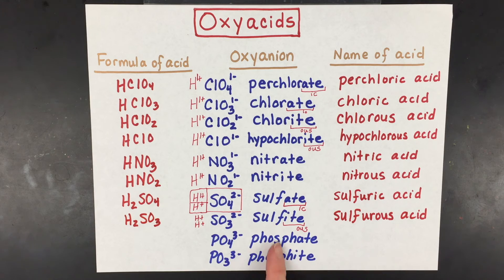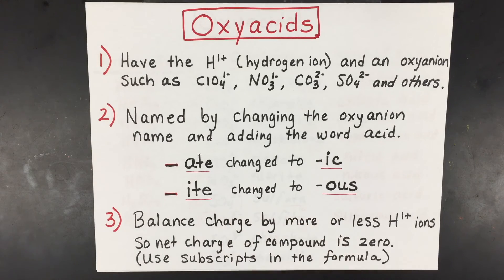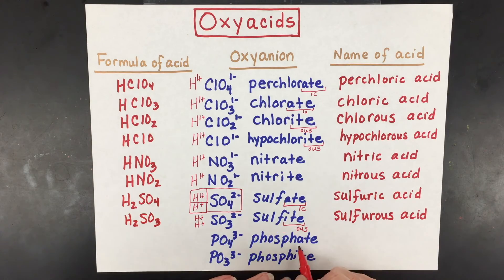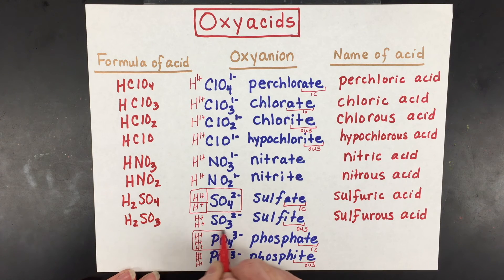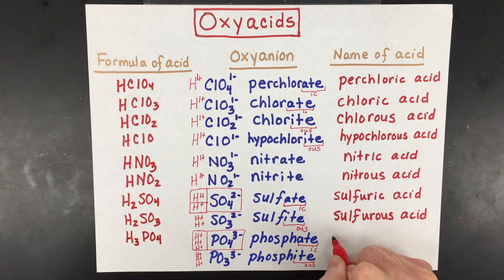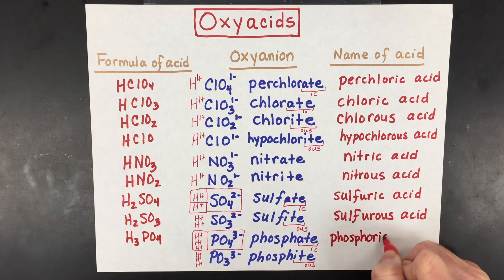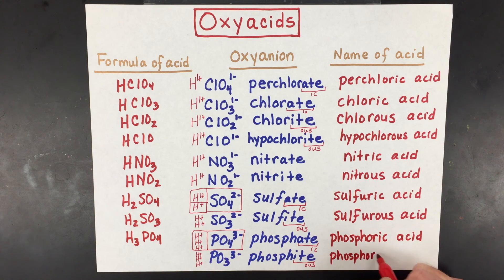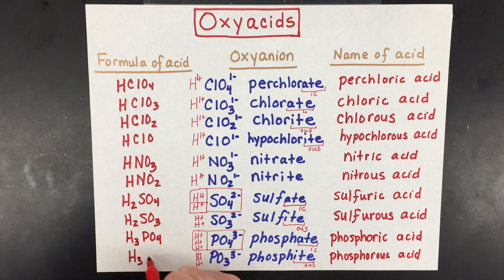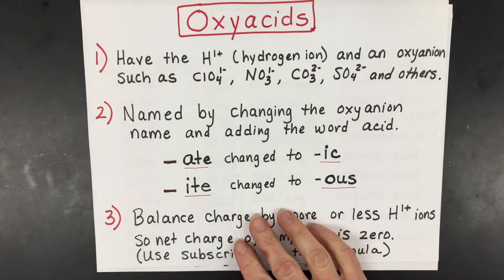Pause the video if you want to try the next two on your own, remembering the rules: 'ate' turns into 'ic' and 'ite' turns into 'ous.' Phosphate and phosphite each have a three-minus charge, so both need three hydrogen ions to balance it. The formula for phosphate is H3PO4, and it's called phosphoric acid — a common ingredient in soda. Without the extra letters it would be 'phosphic acid,' so chemists add the 'or' back in. The same applies to phosphite: it's phosphorous acid, with the formula H3PO3. And that's how you name oxyacids.